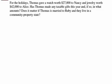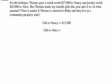Assuming that Thomas is married to Ruby and they live in a community property state, they automatically own equal shares in most property acquired during the marriage. In this case, the gift amount made to Nancy by Thomas and by Ruby will be $13,500 each, calculated as half of $27,000. Similarly, the gift amount made to Alice by Thomas and by Ruby will be $21,000 each, calculated as half of $42,000.